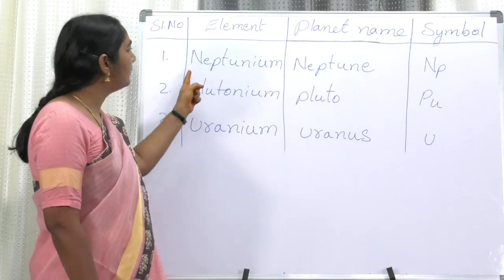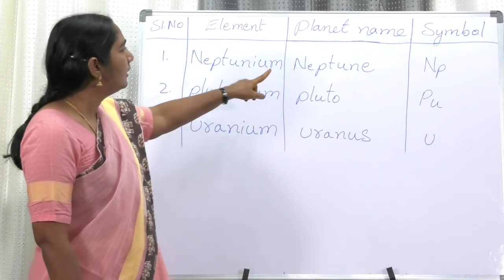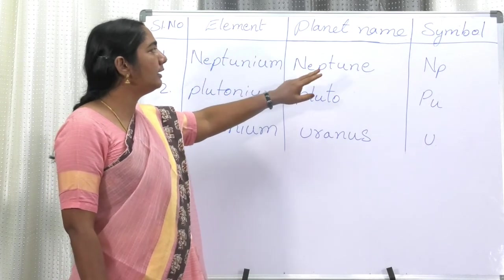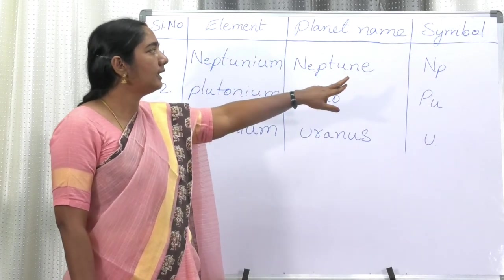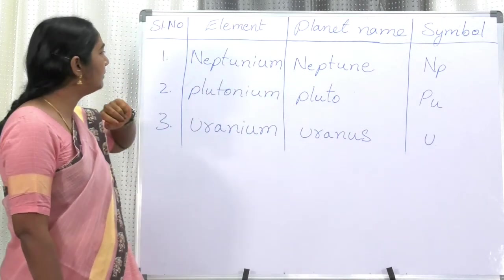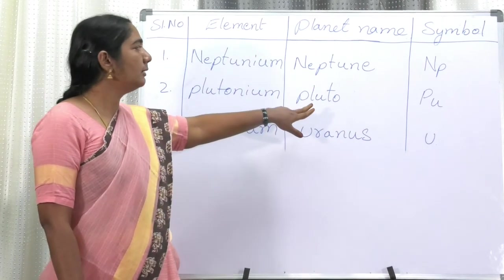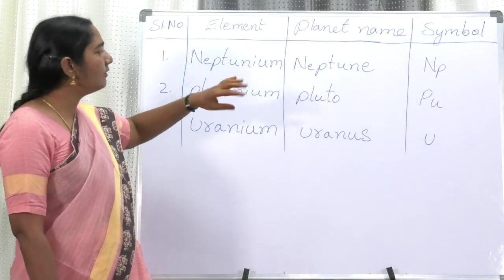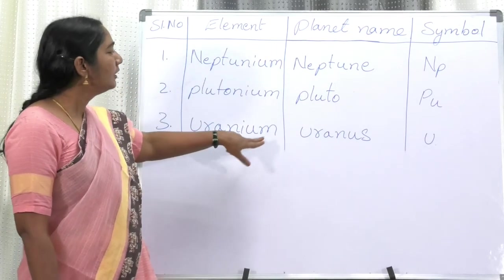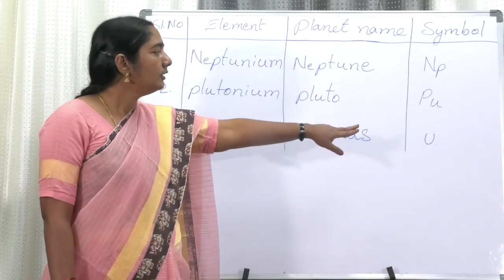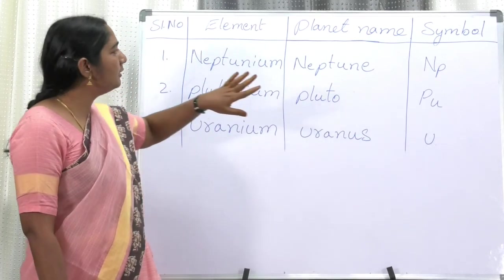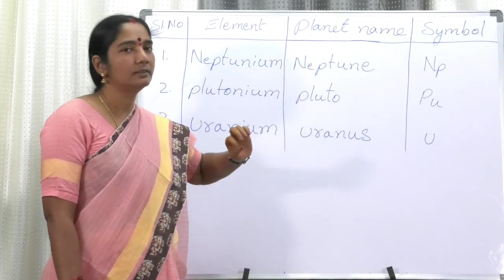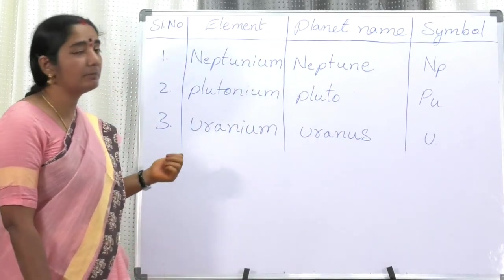Now you can see elements named after planets. Neptunium (Np) — named after the planet Neptune; the symbol is Np. Plutonium (Pu) — named after the planet Pluto; the symbol is Pu. Uranium (U) — named after the planet Uranus; the symbol is U. These are the elements named after the names of the planets. I request you to please remember them. Thank you.